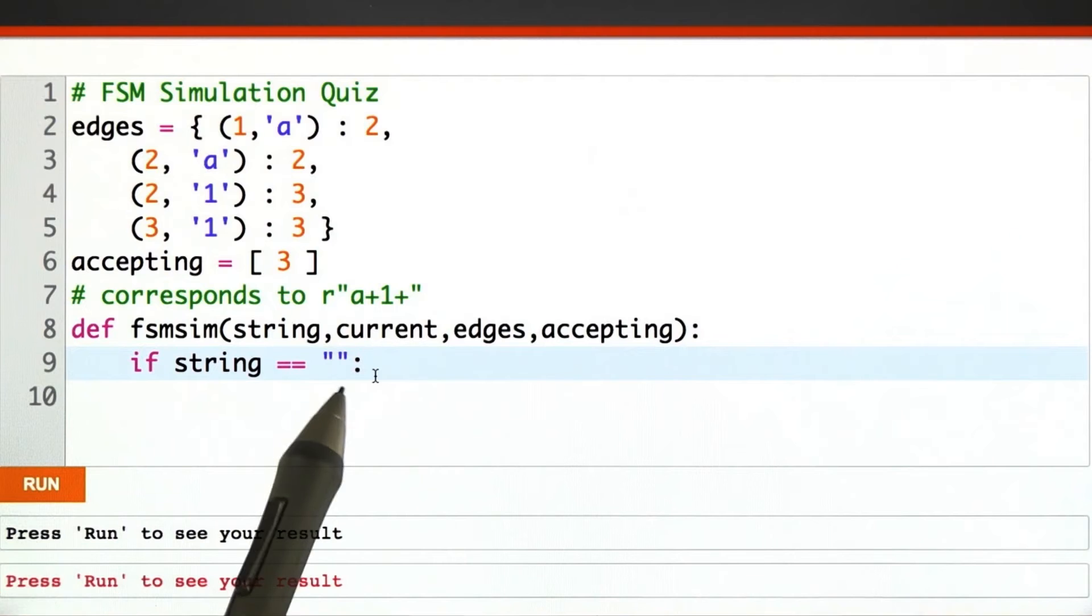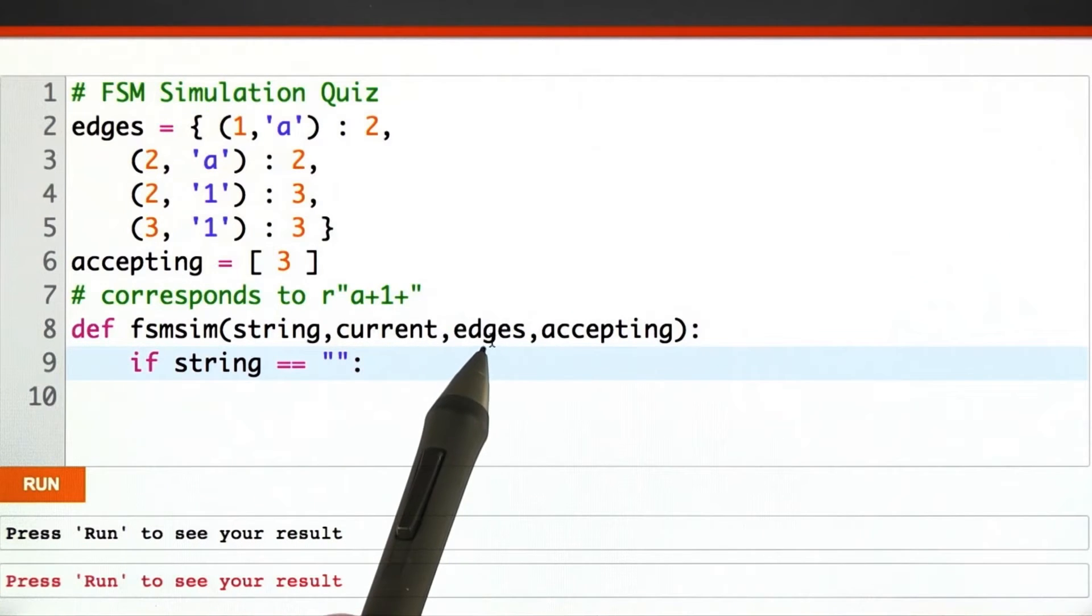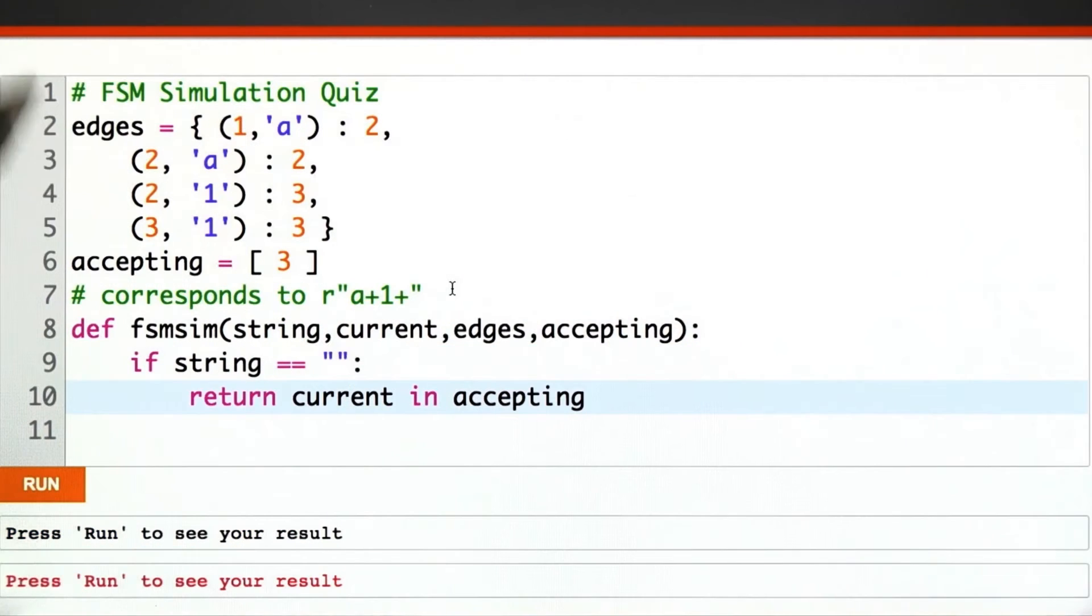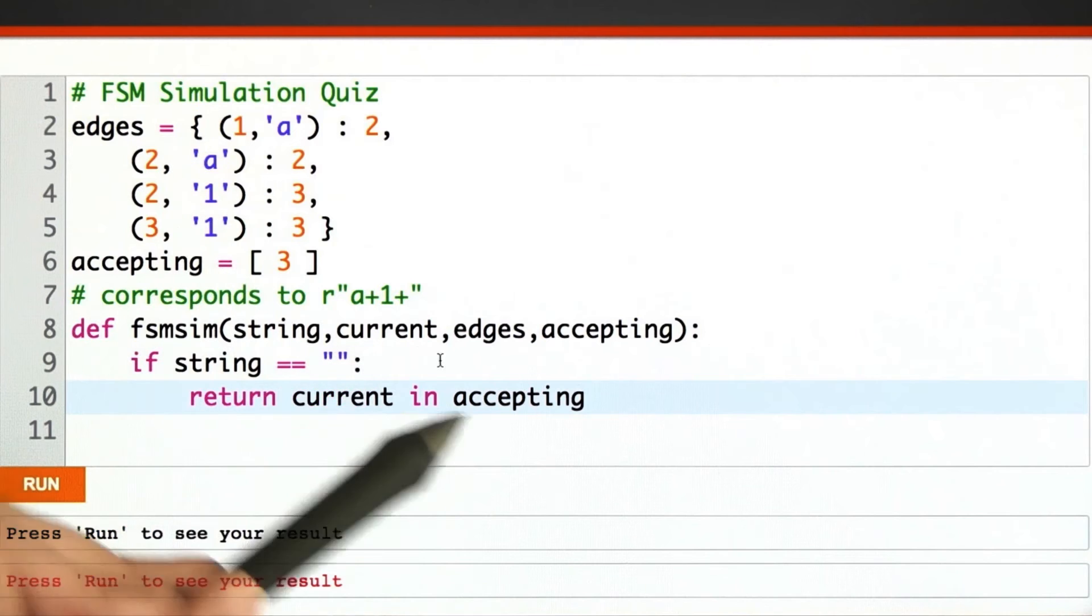Well, one possibility is that we're already at the end of the input, at which point we should just check to see if our current state is an accepting state or not. If we're at the end of the input and we are state 3, then we return true. Otherwise, we should be returning false.